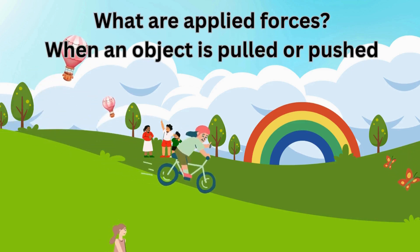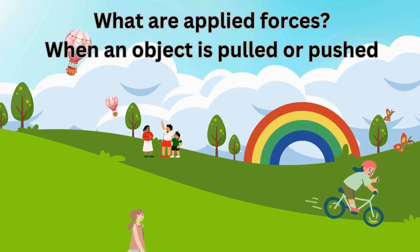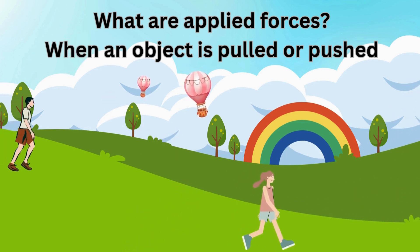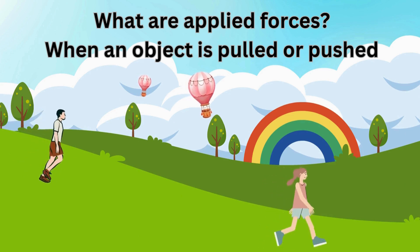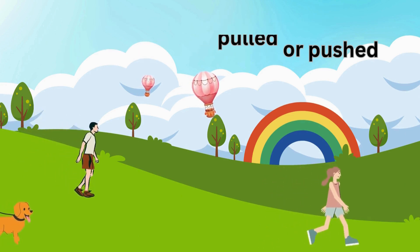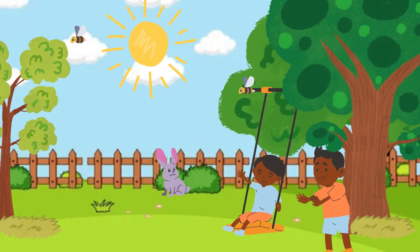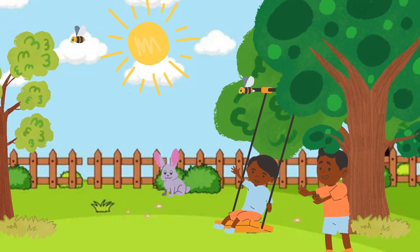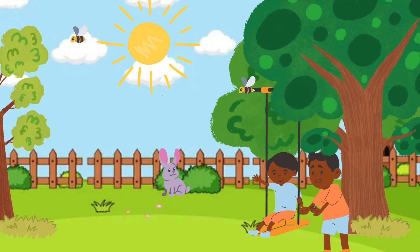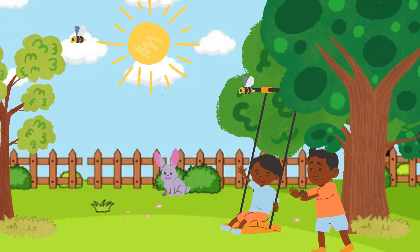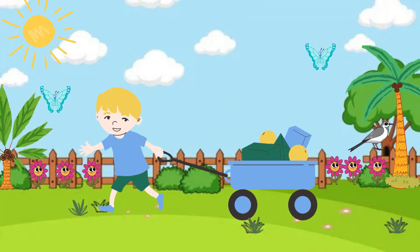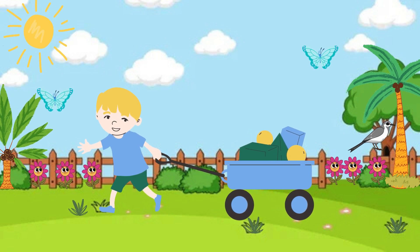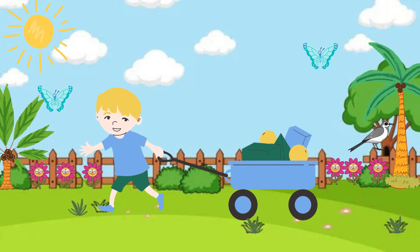An applied force happens when an object is pushed or pulled by another object. The other object can be a person, a machine, or a machine part. Here, the boy is pushing the swing, so the boy applies force on the swing by pushing it. Here, the boy is pulling the cart, so pulling action is also an applied force.